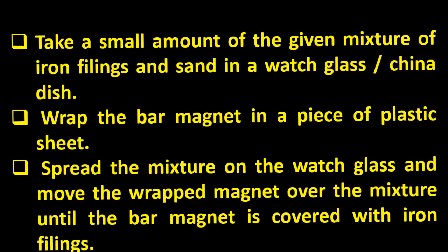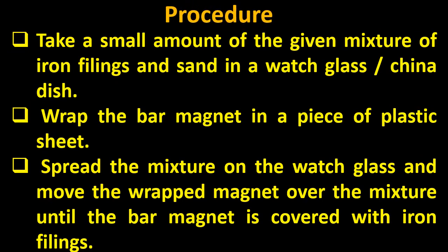Now let's move towards the procedure. Take a small amount of given mixture of iron filings and sand in a watch glass. First, you have to prepare a mixture of sand and iron filings in the china dish. Then take the magnet and wrap the bar magnet in a piece of plastic sheet, meaning pack it properly inside the plastic sheet.